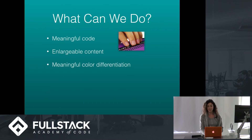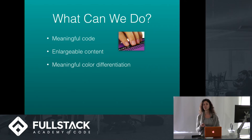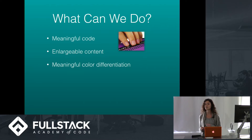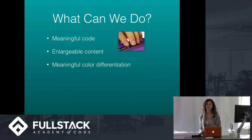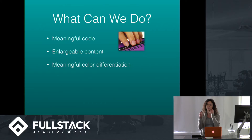Another thing we need to do for users with color deficiency is make sure not to use in tandem colors that are commonly swapped, such as red and green or blue and yellow. So okay and cancel is usually red and green, and that's actually really difficult for some users because it's just like gray for some people.